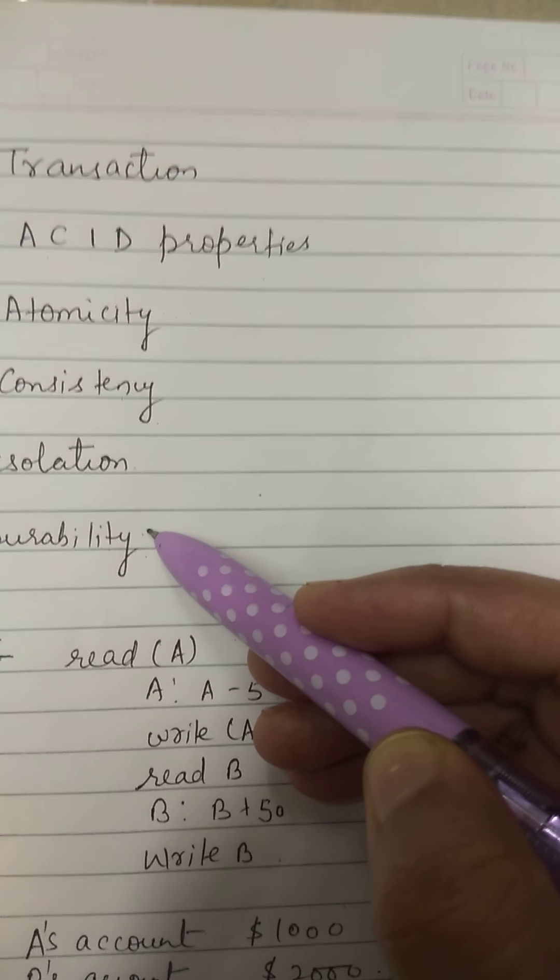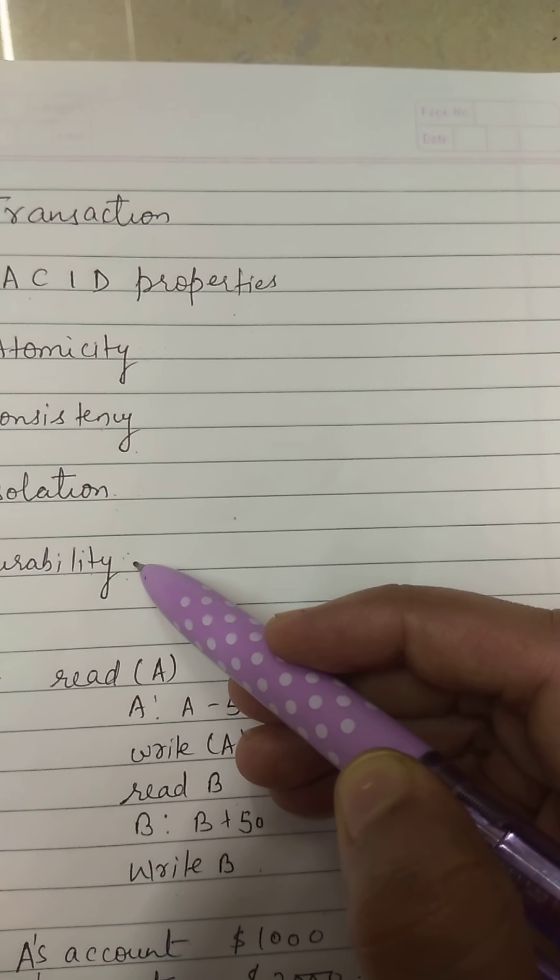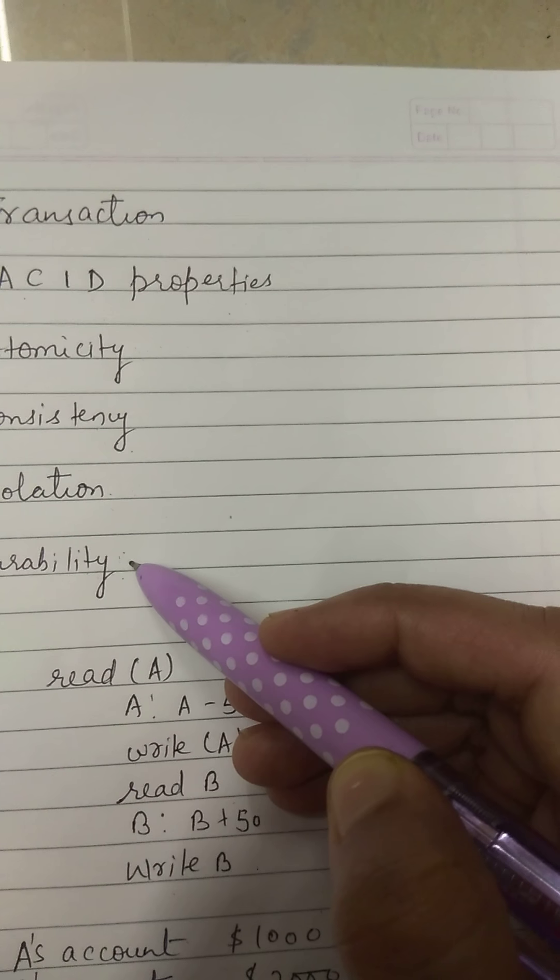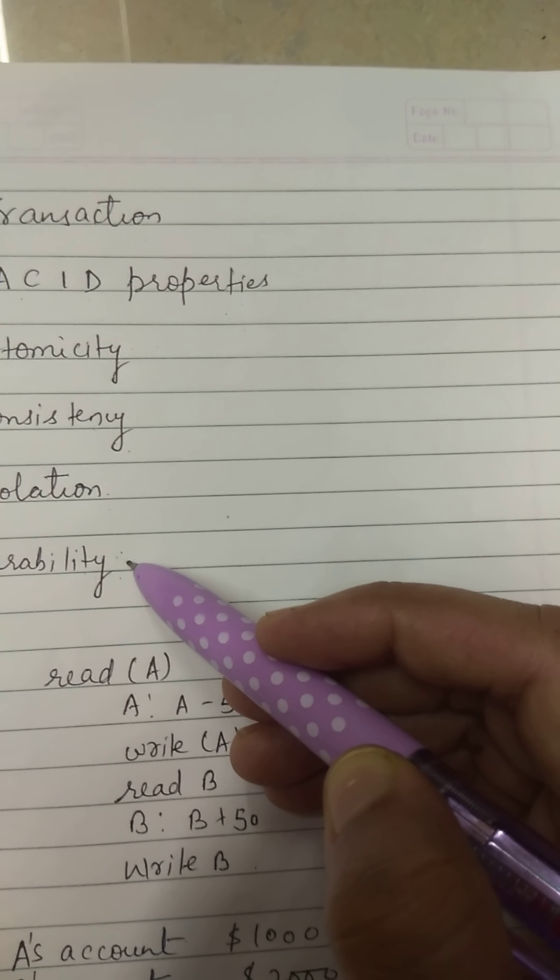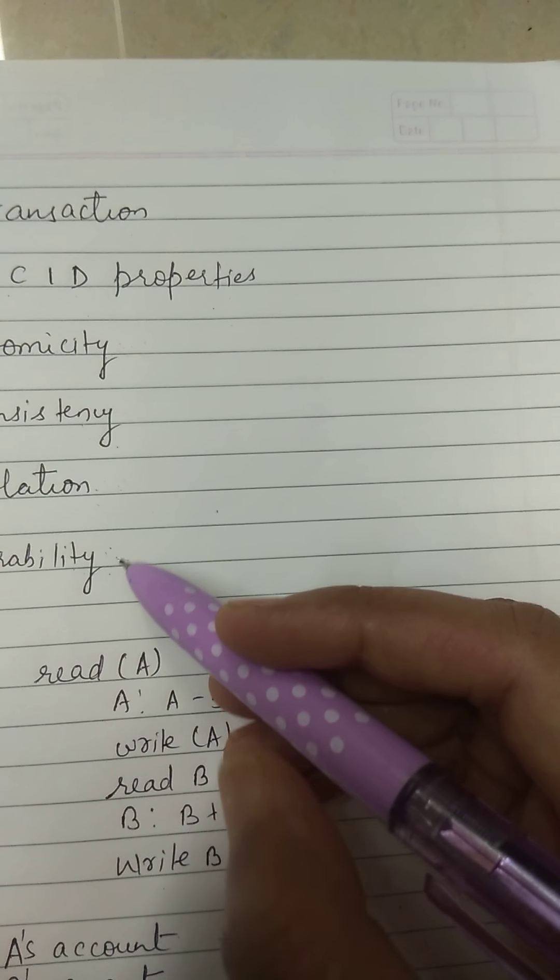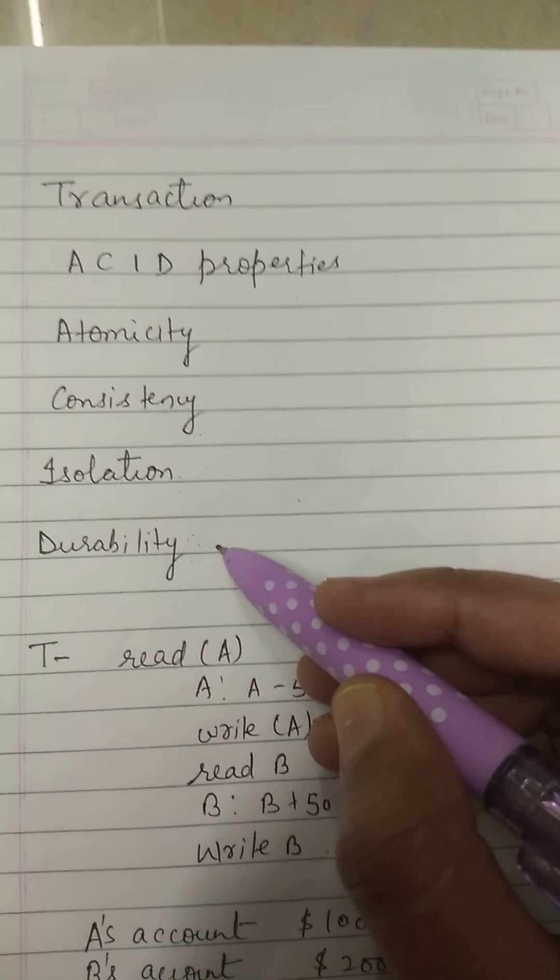Now the durability. The durability property guarantees that once a transaction completes successfully, all the updates that it carried out on the database persist even if there is system failure after the transaction completes execution.